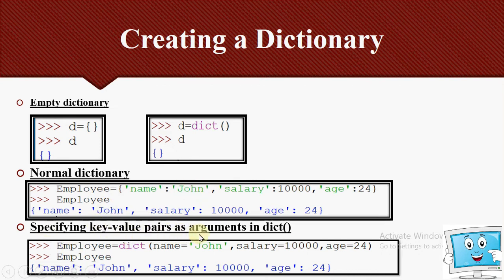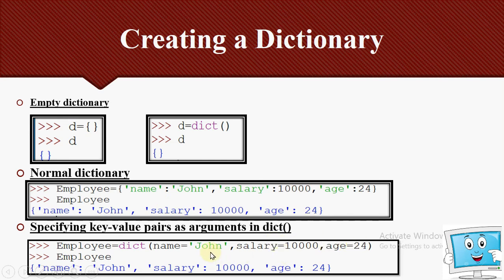The third method is specifying key-value pairs as arguments in the dict() function. Instead of colons between key and value, we use the equals sign: dict(name='John', salary=10000, age=24). Only string values need quotes. When printed, the output is the same normal dictionary format.